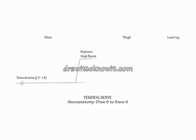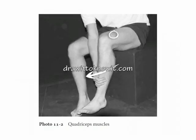Next, continue the femoral nerve through the thigh. Indicate it innervates the quadriceps muscle. Extend your lower leg against resistance to demonstrate the action of the quadriceps muscle.